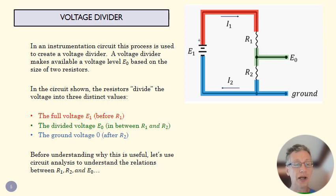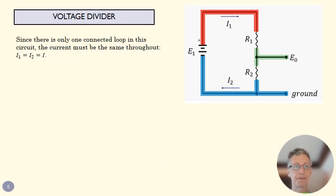Now, we want to talk a little bit about how those resistance values are related to that divided voltage, E0. Well, so just a little circuit analysis. Again, we've only got one current loop here.